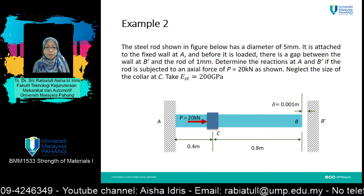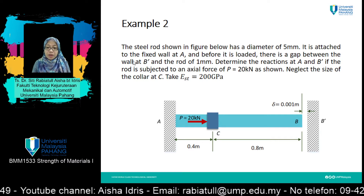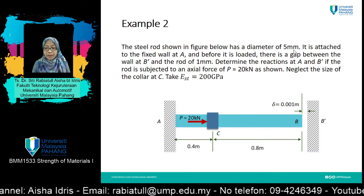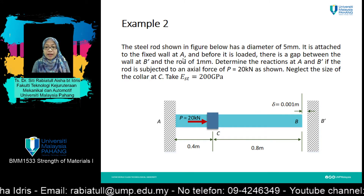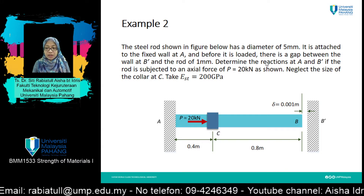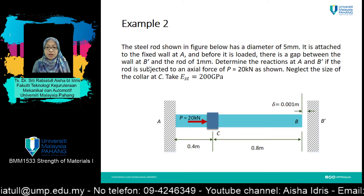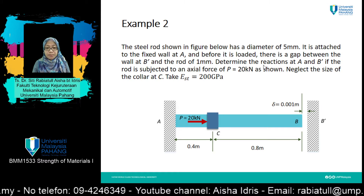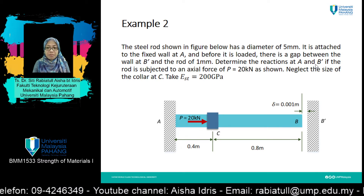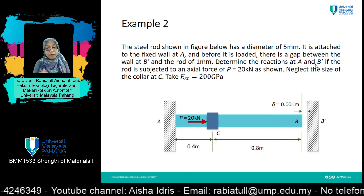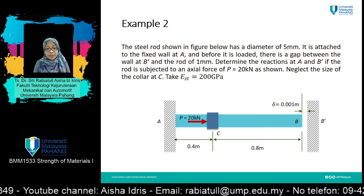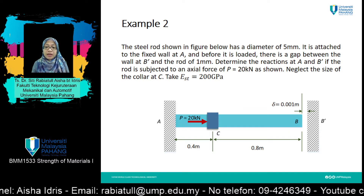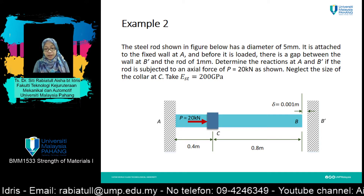Now let's move on to Example 2. The steel rod shown in the figure below has a diameter of 5 mm. It is attached to a fixed wall at A, and before it is loaded there is a gap between the wall at B and the rod of 1 mm. Determine the reactions at A and B if the rod is subjected to an actual force P equals 20 kN. Neglect the size of the collar at C. The value of E is 200 gigapascal.